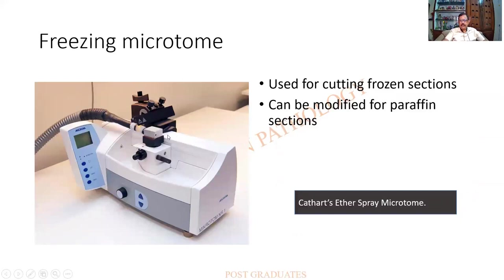The freezing microtome uses ether as a spray to provide freezing. It was used earlier for rapid diagnosis and for the demonstration of fat while the patient is on the operating table. Instead of paraffin wax, ice or ether provides the mechanical support for the tissue block.